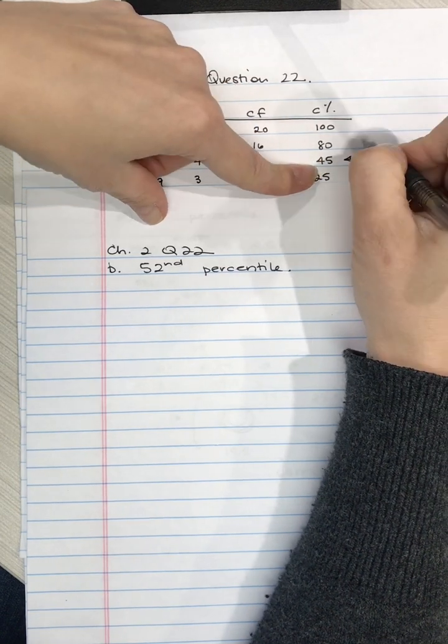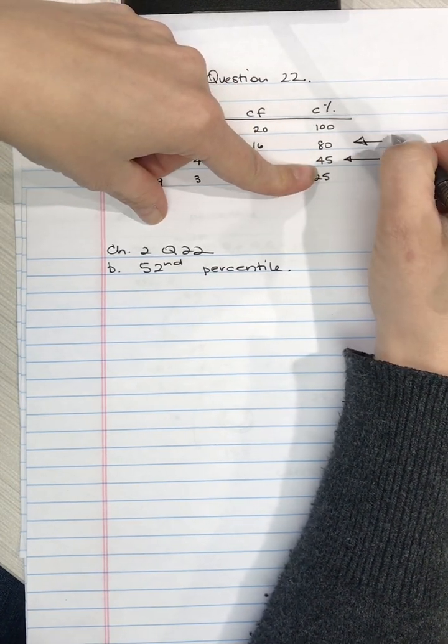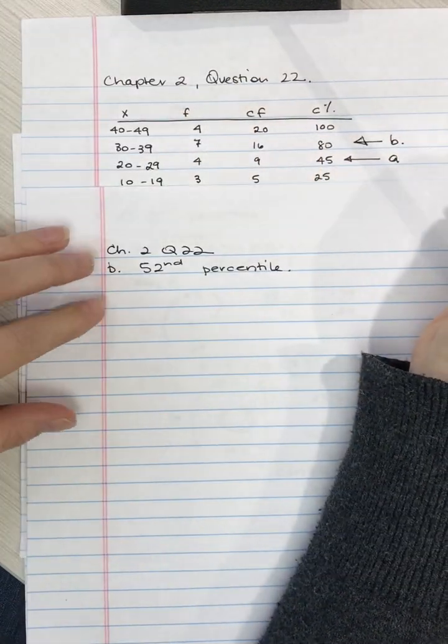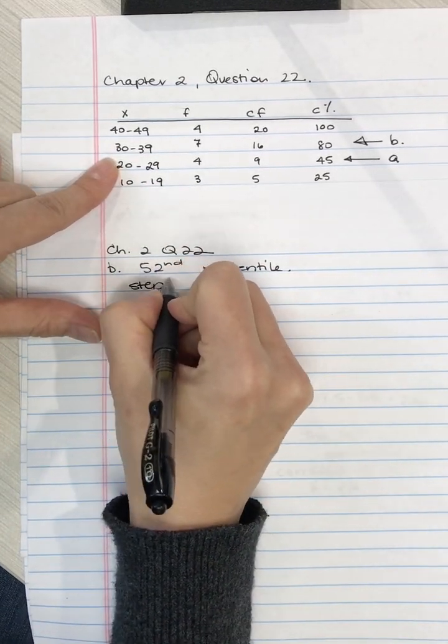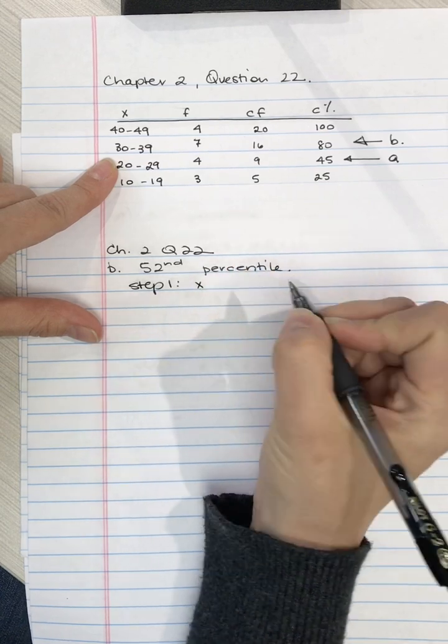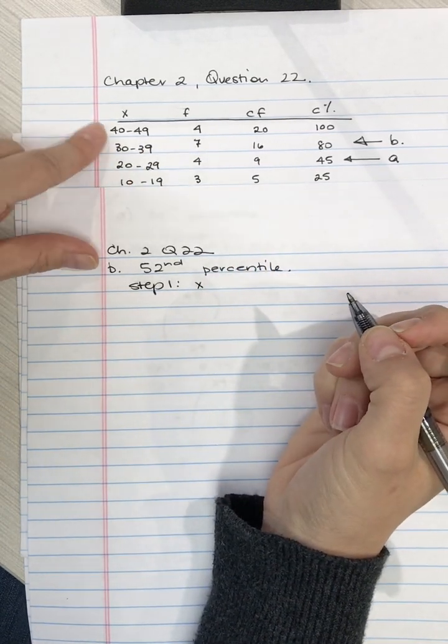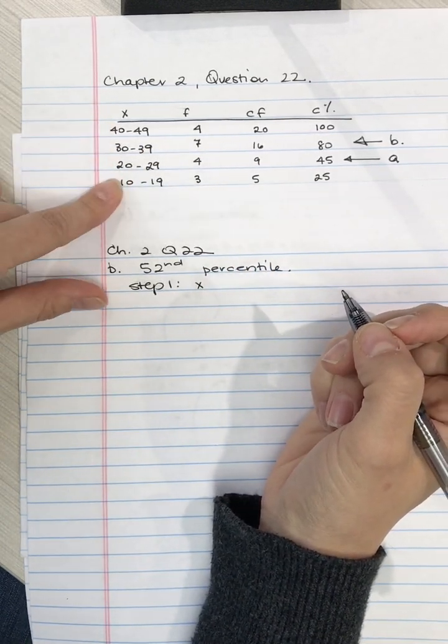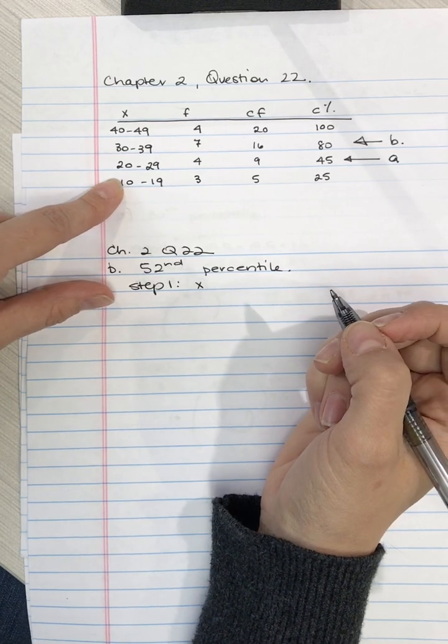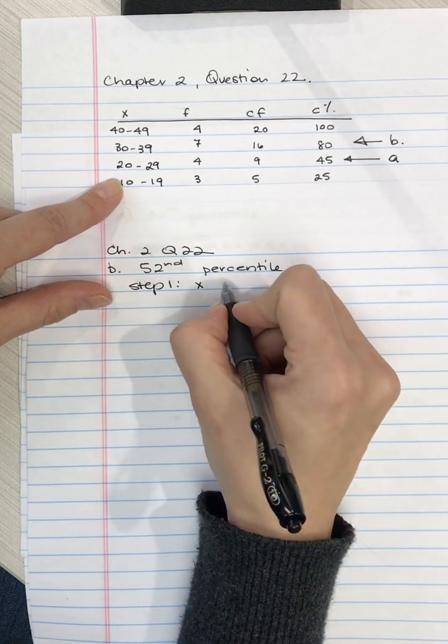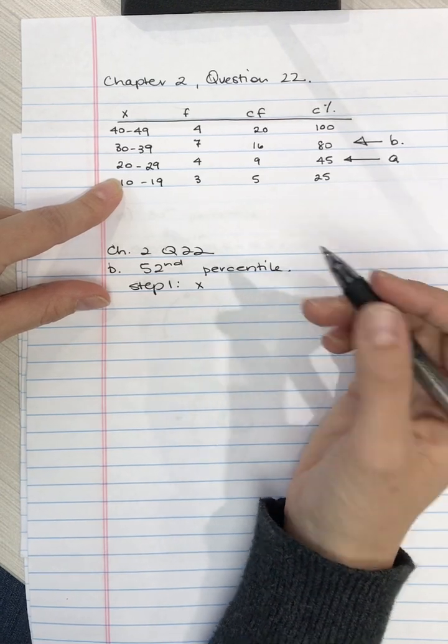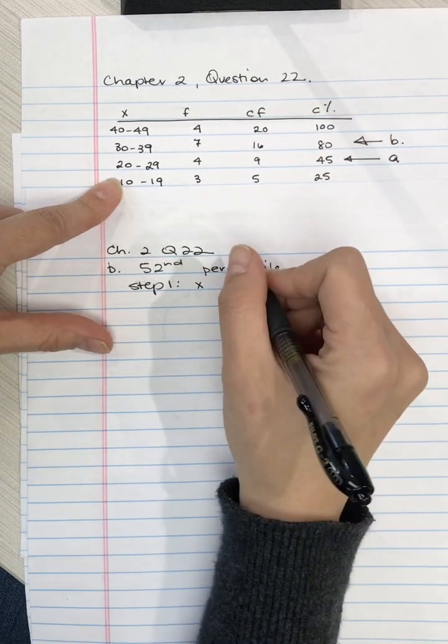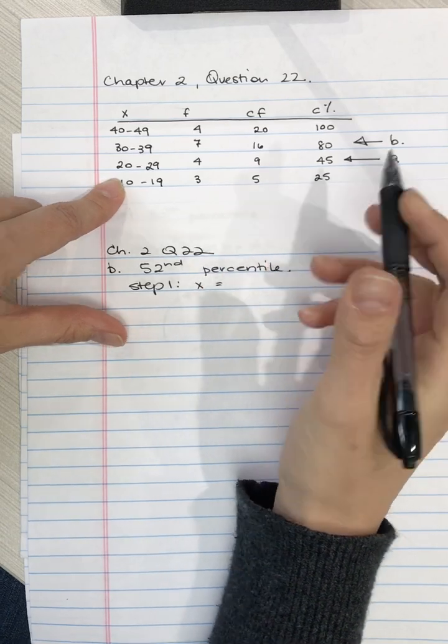And by 39 we're up to 80, and 80 is greater than 52. So for part A we were here, for B we are here in this one. Step 1 is to find the width of X. Now the width of the X intervals is always going to be the same within a given question.